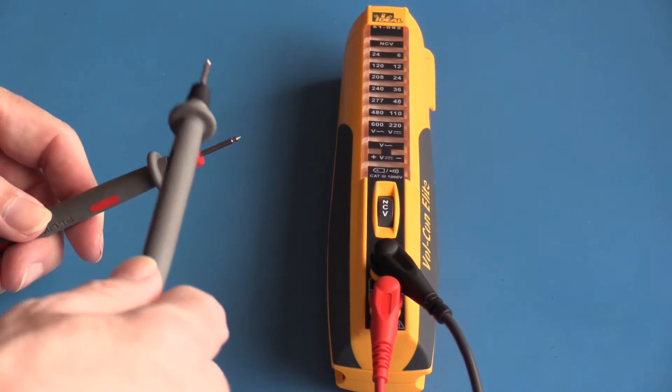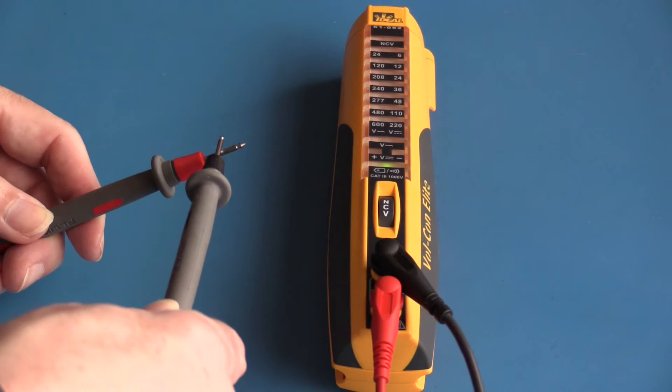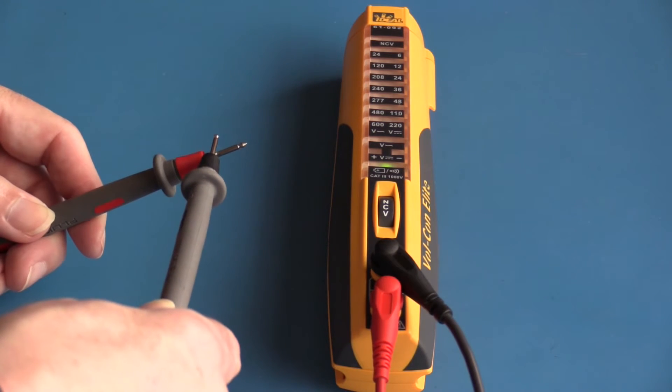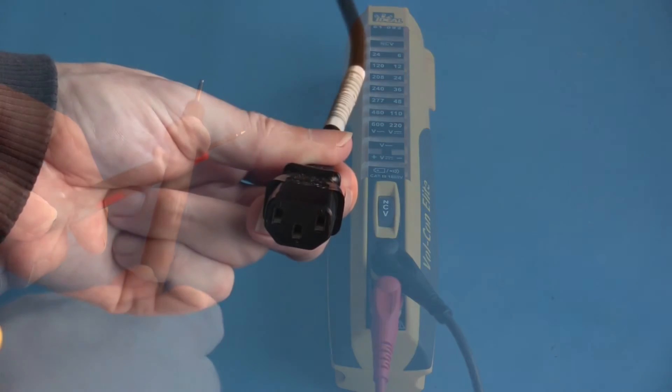The Voltcom Elite can also be used as a continuity checker. It is a nice loud beep with a green LED indicator.